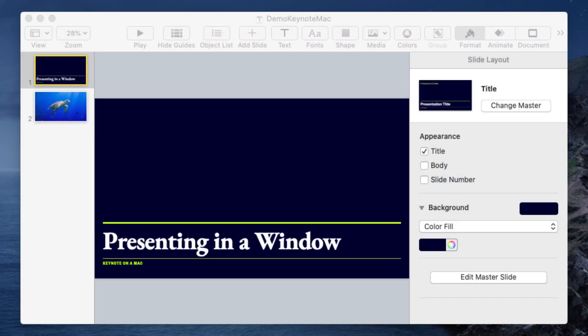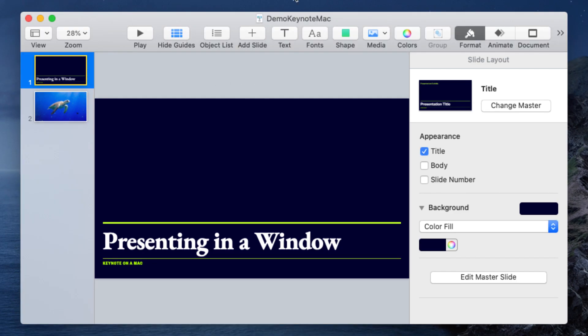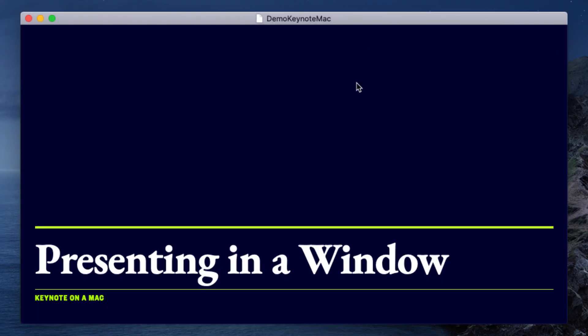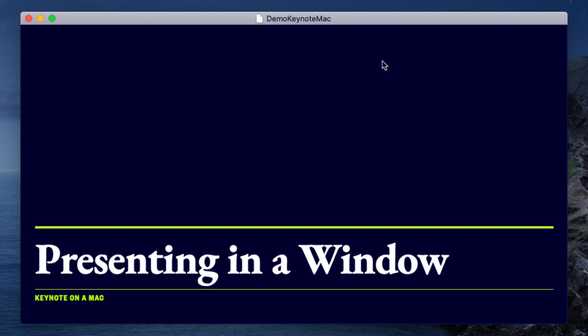Now let's hop over to Keynote — I have it open here, and this is only for Macs. Keynote is a little simpler. All you have to do is go to Play, and you'll see the options Play Slideshow or Play Slideshow in Window. There's no hotkey for this unfortunately, but if you choose Play Slideshow in Window, it changes right away. If you hover, you'll see a taskbar, but Keynote has done us the favor of making it disappear when you don't have the cursor over it. So now we've seen the three different options for PC and Mac with PowerPoint, and Mac with Keynote.